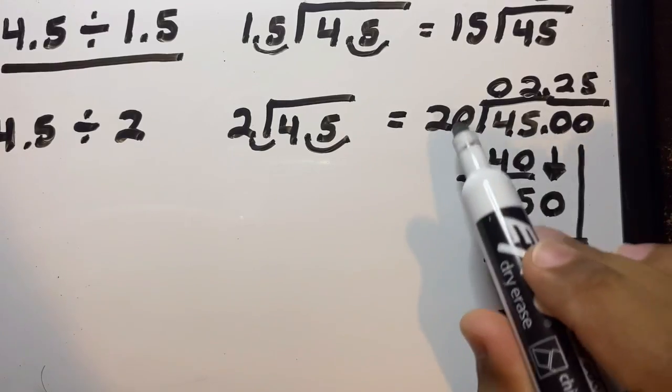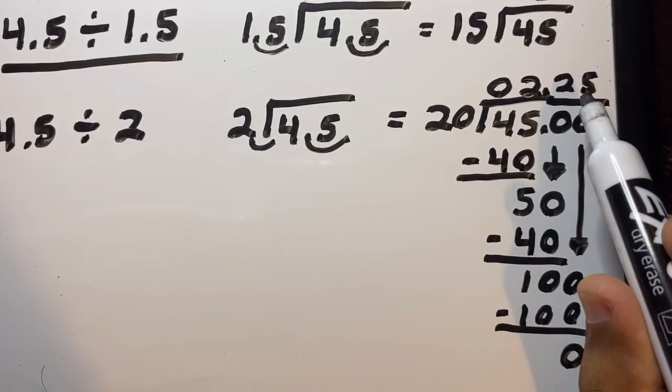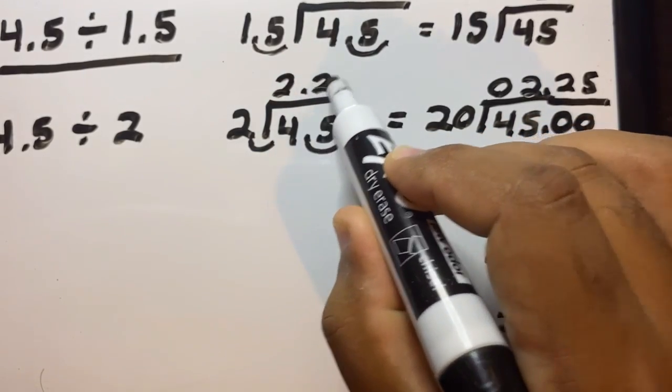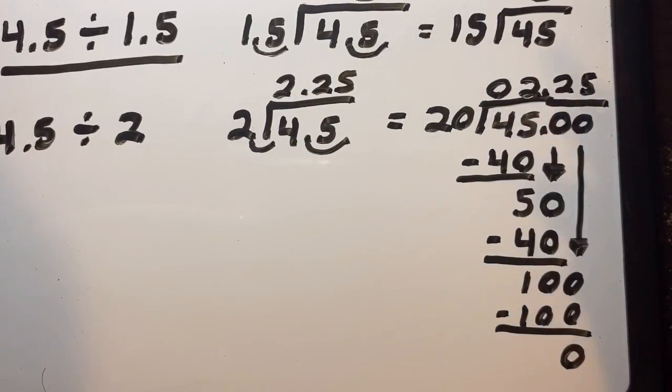So because this equals 2.25, that also means that this equals 2.25, and that's how you solve it.